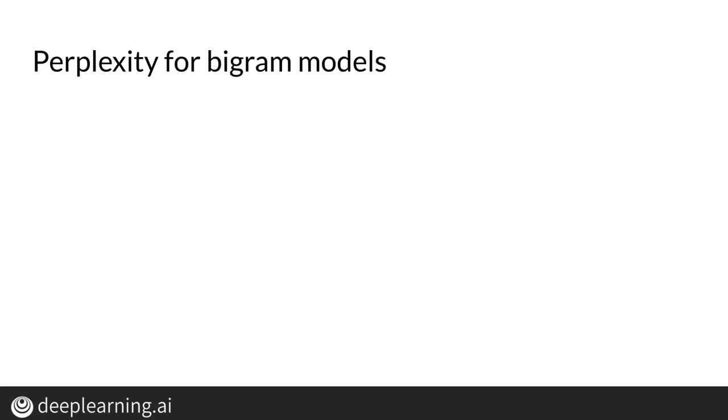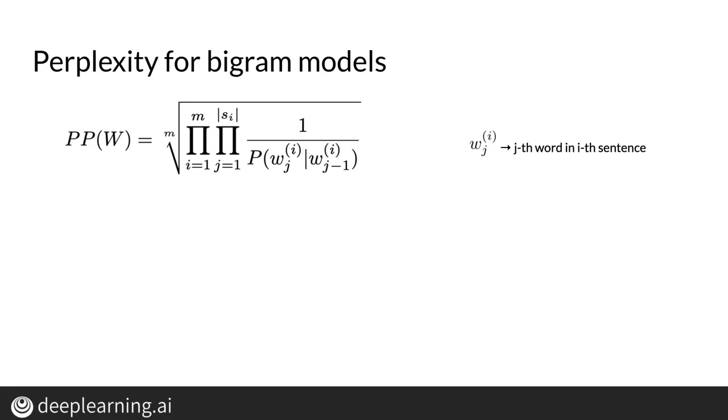Now we get ready to calculate perplexity for bigram models. In a bigram model, you calculate the product of bigram probabilities of all sentences. Then, take the power of negative 1 over m. Recall that the power of negative 1 over m of the probability is the same as the mth order root of 1 over probability.